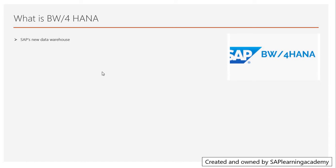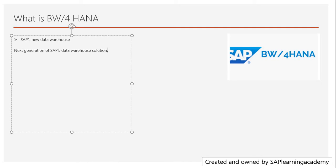So first I'll talk about what is BW4HANA. BW4HANA is a new data warehouse delivered by SAP — it is the next generation of SAP's data warehouse solution. It will be continuing the BW functionality of what it had in earlier versions like BW 7.3, 7.4, but the way of doing things will be changed.